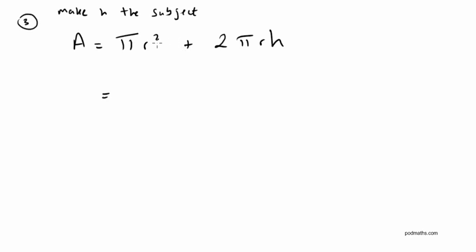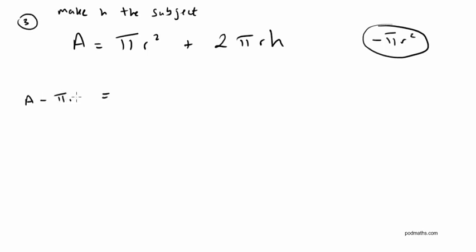Let's get rid of the thing being added first. So let's subtract pi r squared from both sides. On the left-hand side it gives A minus pi r squared, and on the right, pi r squared minus pi r squared leaves just 2 pi r h. I've eliminated pi r squared from the equation.